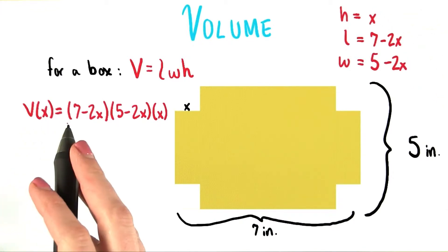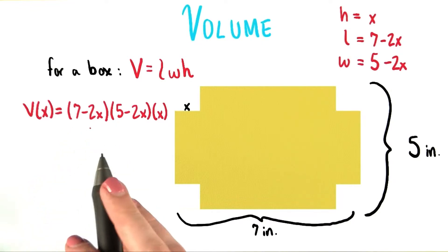So we end up with V(x) equals the quantity 7 minus 2x times the quantity 5 minus 2x times x.